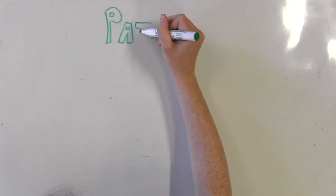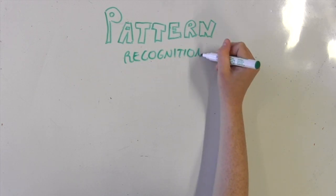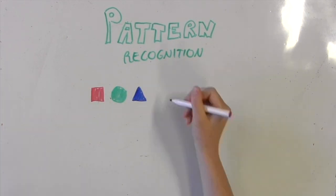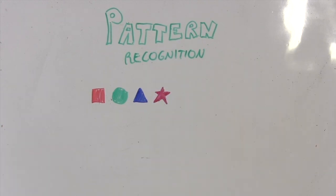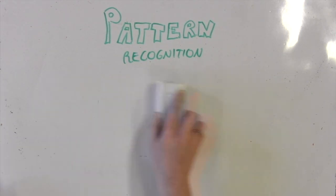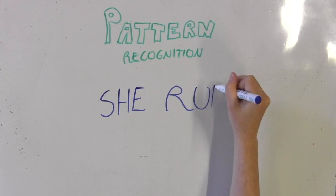Linguists today have even more theories about how we learn our first language. One is called pattern recognition. This is when a child learns the rules of grammar because the child can see a pattern. For example, a child can see that you need to add an S to the end of a verb, a doing word, when speaking about somebody else like daddy eats or she runs.